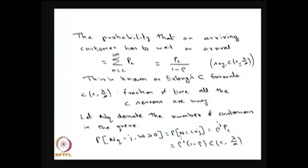I am denoting this with the letter C of c, lambda by mu, because you need the number of servers in the system and you need lambda as well as mu. If I know this quantity, I can find out the Erlang C formula. This is a very important formula — using it you can find out the optimal c such that the probability is minimized. You can find out the optimal number of servers needed to have some upper bound on the probability that an arriving customer has to wait. Therefore, this Erlang C formula is very useful in performance analysis of any system.